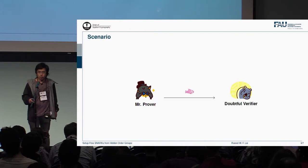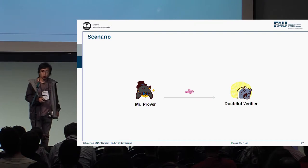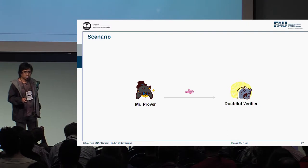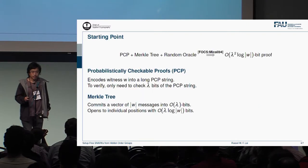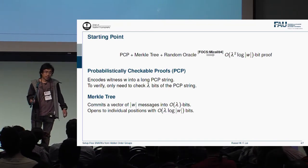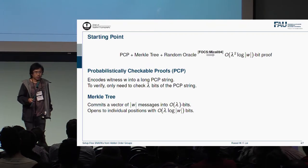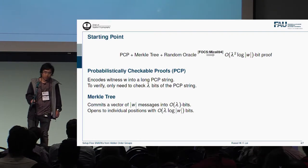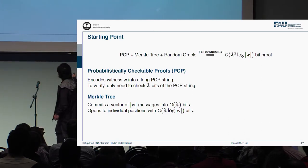In this work, we will construct a proof with only two group elements long, plus a Lambda bit string, where Lambda is a security parameter. The starting point is the CS proof from Micali, in which the prover basically encodes the witness in a PCP string, then commits to the PCP string via a Merkle tree, and then opens to some random positions chosen by a random oracle. This approach gives you such a proof size.